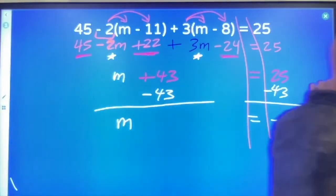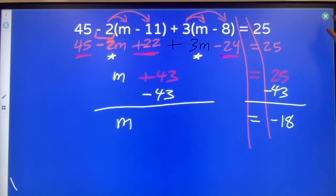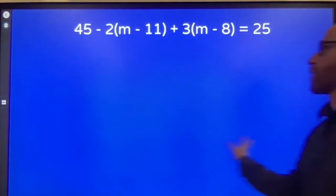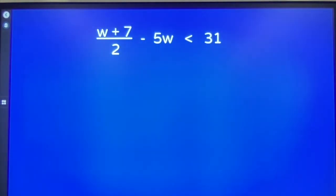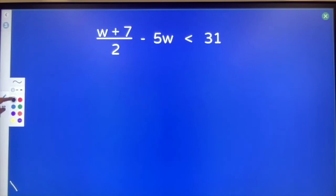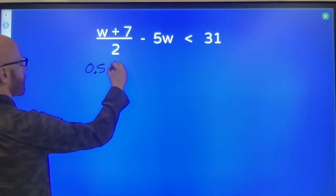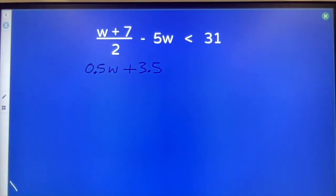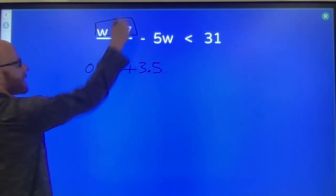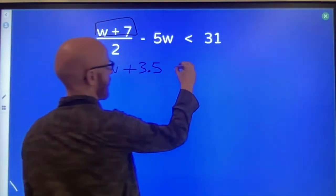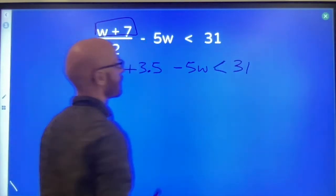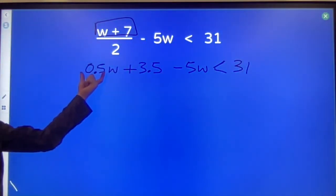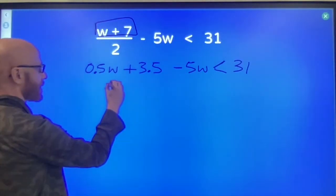One more example to try. Again, strongly recommend you hit pause. Try it yourself before you watch what I do. It's half of W plus half of 7. I took this package, split it in half. Still have our minus 5 W's is less than 31. Combine things that are alike.